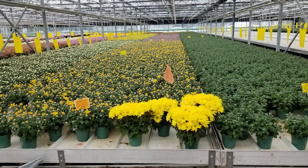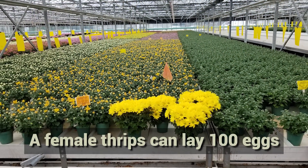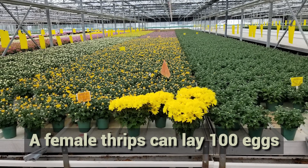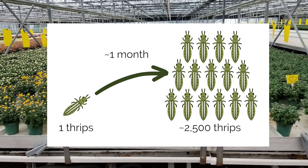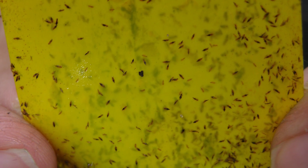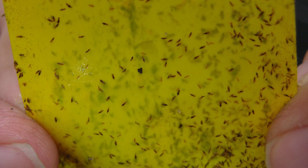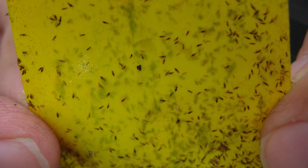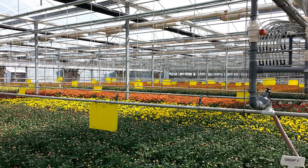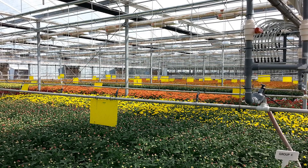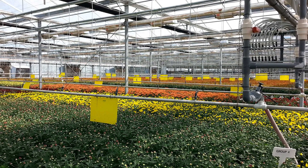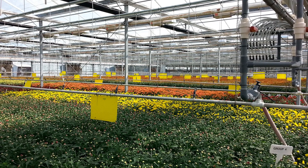For example, one female thrips lays an average of 100 eggs over her life, and at least 50% of these will be female and also lay eggs. After one month or two generations, a single female thrips could be responsible for 2,500 more female thrips infesting the crop if she's not caught. OMAFRA studies have shown that mass trapping can remove anywhere from 34,000 to 170,000 thrips over 12 weeks in a 10,000 square foot compartment of chrysanthemums.